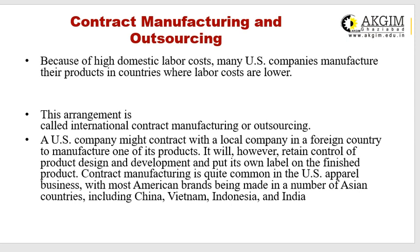Because of high domestic labor costs, many US companies manufacture products in countries where labor costs are low. This arrangement is called international contract manufacturing or outsourcing. A US company might contract with a local company in a foreign country to manufacture one of its products, while retaining control of product design and development and putting its own label on the finished product. Contract manufacturing is quite common in the US apparel business, with most American brands made in Asian countries including China, Vietnam, Indonesia, and India, where labor costs are lower.